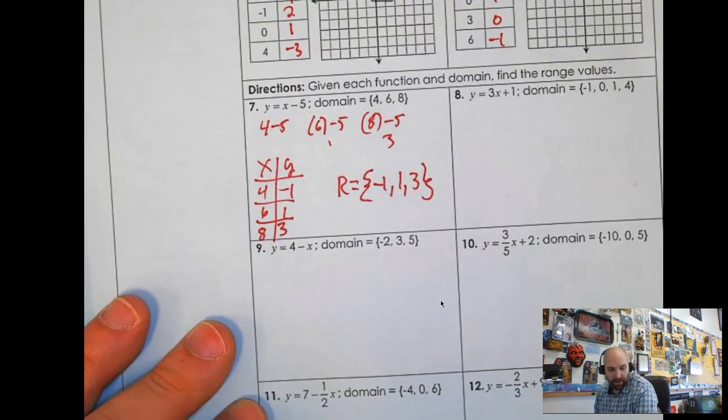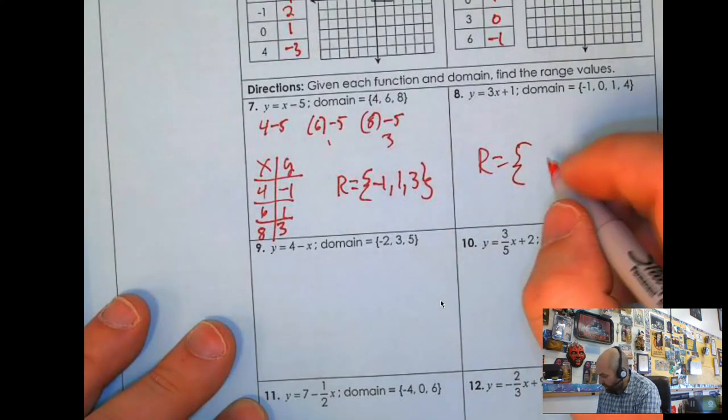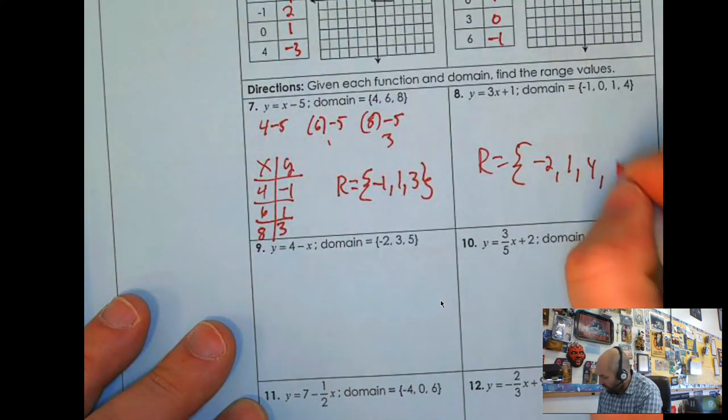Why don't you pause the video, do number 8. And I'll see you back here in a minute. If you did number 8 correctly, your range should be negative 2, 1, 4, and 13.